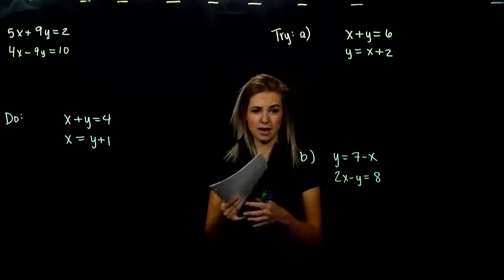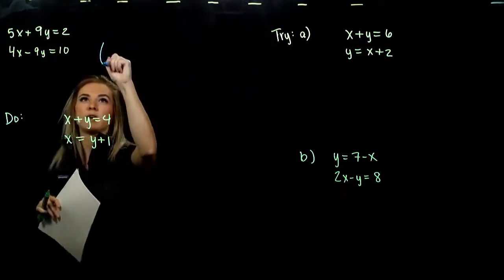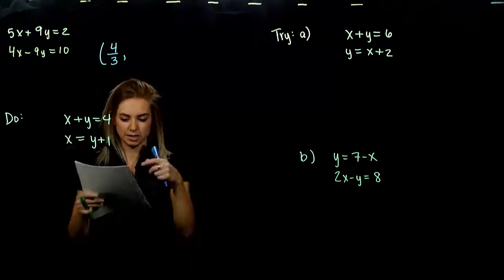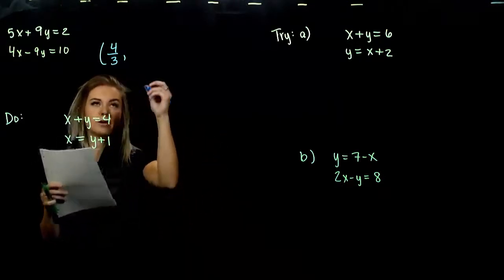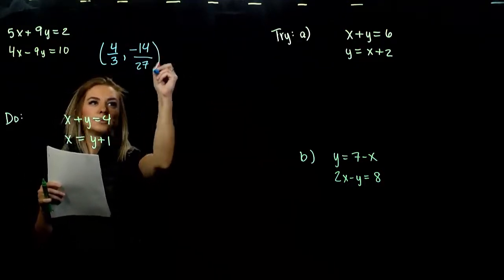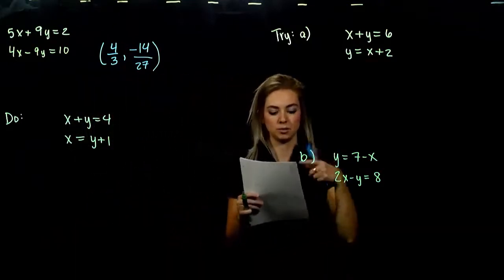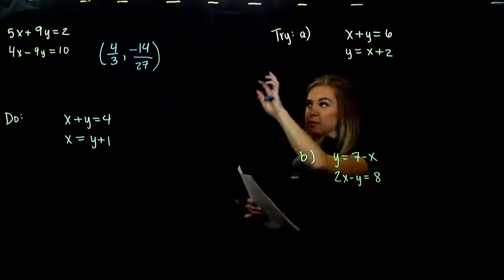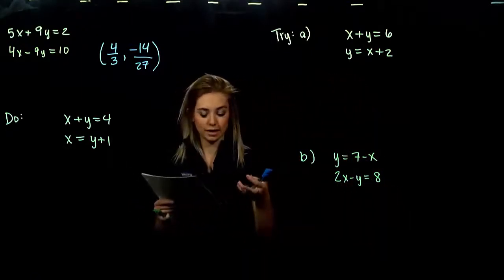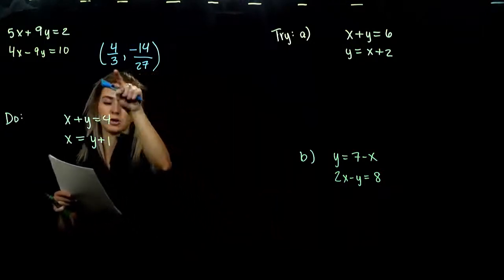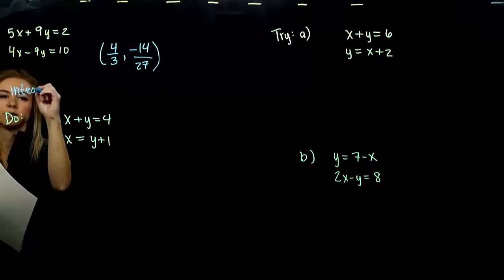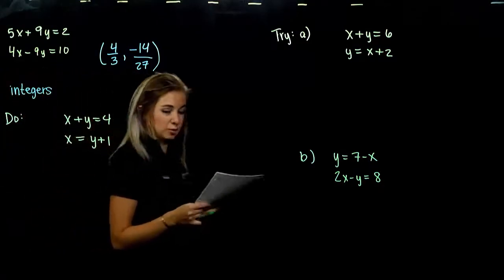The solution for that example is actually at 4 thirds, which doesn't seem so unreasonable, but trying to guess and check from a graph is a little bit hard. The y-coordinate is negative 14 over 27 — way too difficult to gather that solution from a picture. So solving by graphing is not always fast or accurate, especially when the solutions aren't integers and we have those gross fractions involved.